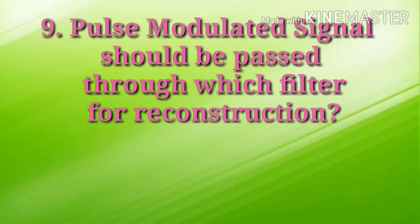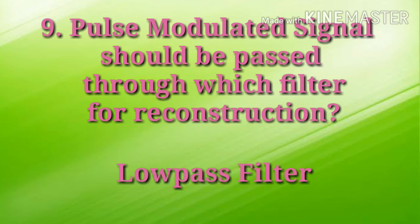The next question is: a pulse modulated signal should be passed through which filter for reconstruction? The answer is a low pass filter. The pulse amplitude modulated signal follows the amplitude of the original signal as it traces the path of the waveform. In natural pulse amplitude modulation, a sampled signal can be reconstructed by passing it through an efficient low pass filter with exact cutoff frequency. So the answer is a low pass filter.